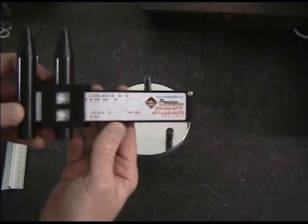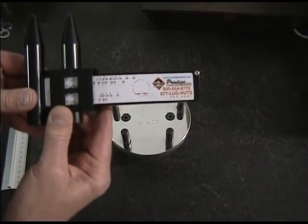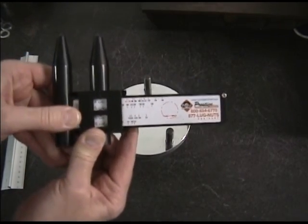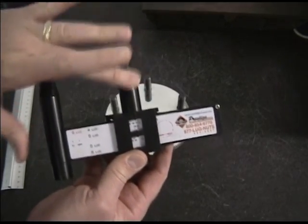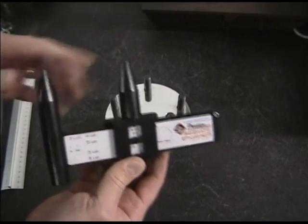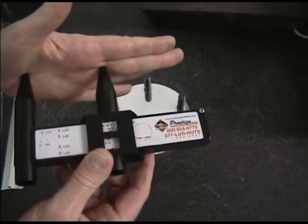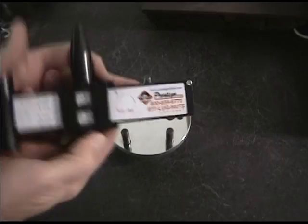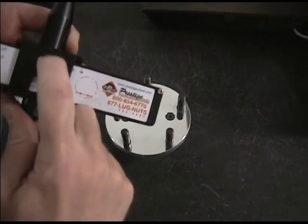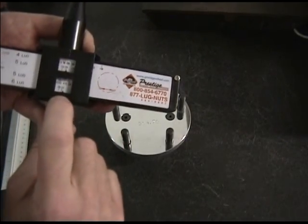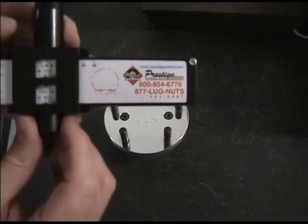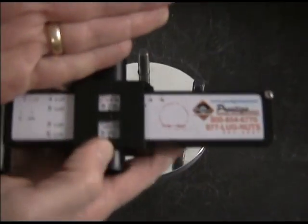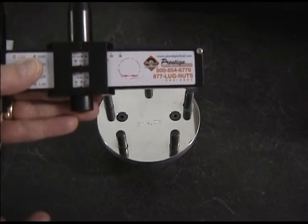This particular tool happens to come from Prestige, and what it is is just a caliper. You can see that these pointed areas would fit into two adjacent holes in the wheel. And then you look at the reading here. You've got a 4 lug, a 5 lug, and a 6 lug. You can then, by lining it up with the wheel, you just put it in the wheel, it self-aligns in these cones right here, and then you've got the readings, and you choose the number of lugs you have, and it will read out directly what the bolt circle of the wheel is.